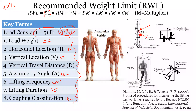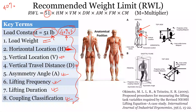We start with 51 pounds, and any time a condition becomes unfavorable — for example, the object is too far from the body — it reduces the person's ability to lift that 51 pounds significantly. This is based on 40th percentile female strength because people who work in lifting are assumed to be stronger than a 40th percentile female.